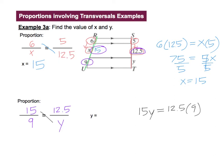If you put that into a calculator, 12.5 times 9 is 112.5. And then just divide by 15. 112.5 divided by 15 is 7.5. So Y is equal to 7.5. That's your final answer.